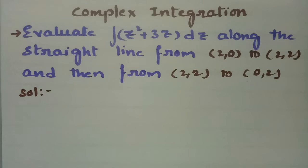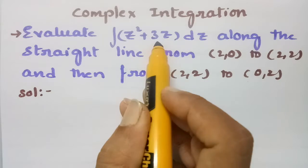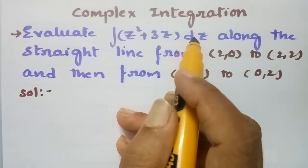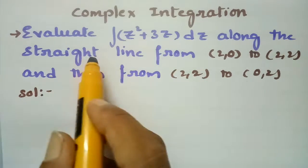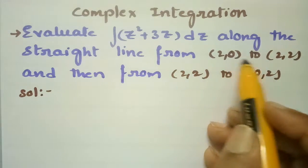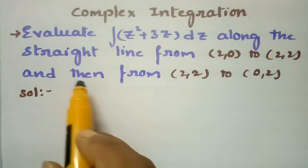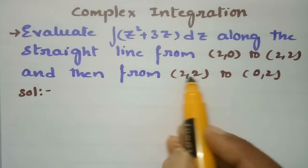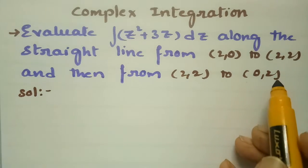This problem is from complex integration. In this video I am going to evaluate the integral of z squared plus 3z dz along the straight line from the points (2,0) to (2,2), and then from (2,2) to (0,2).